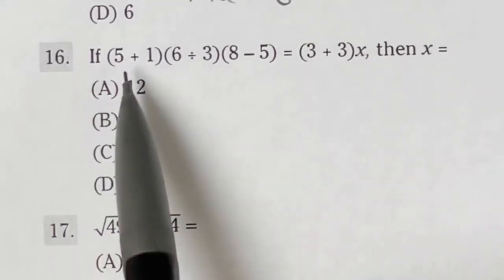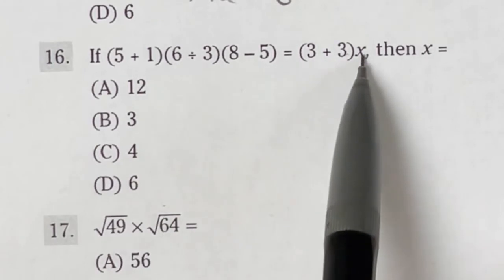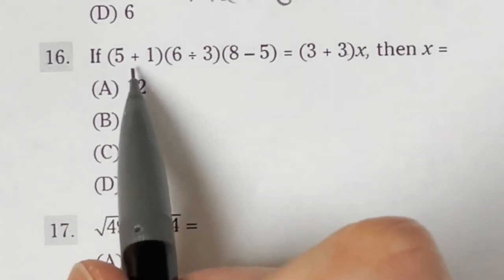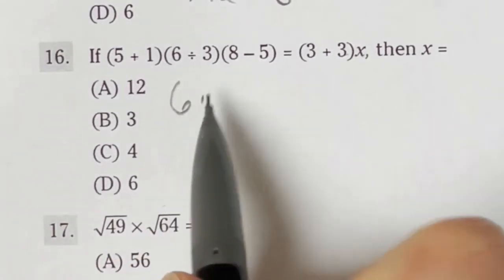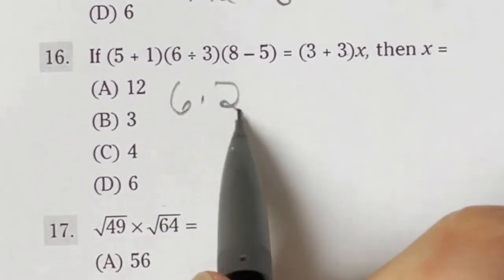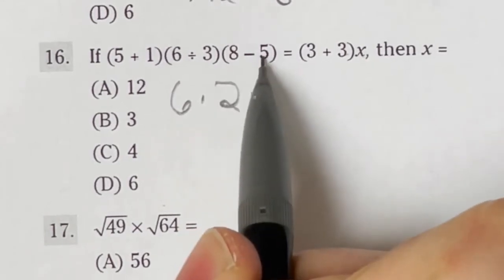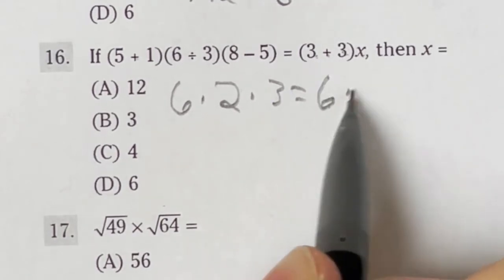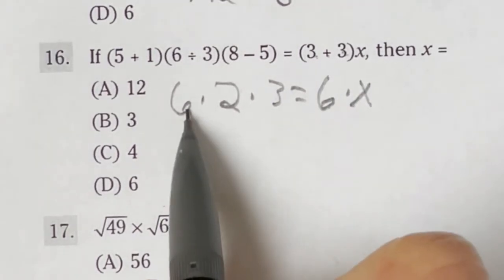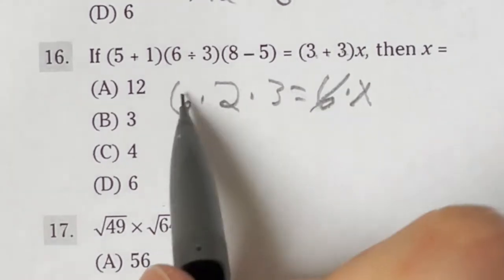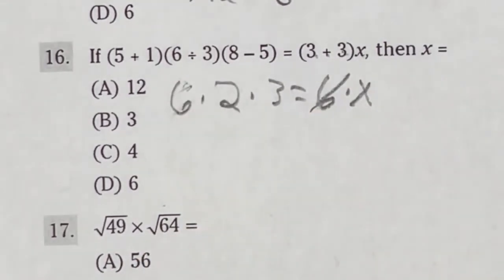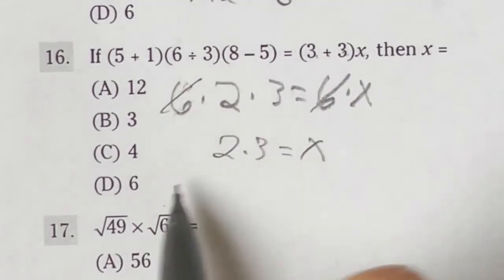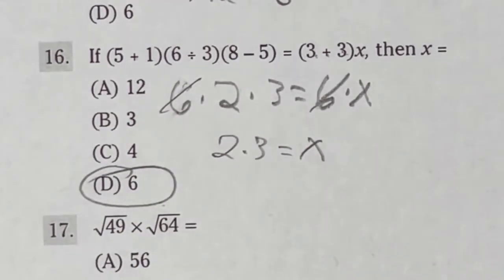Number 16 on the ASVAB says this whole thing is equal to this times x. Then that means x is equal to what? Well, let's go ahead and look closely at this. 5 plus 1 is 6 times 6 divided by 3, which is 2, times 8 minus 5, which is 3, equals 3 plus 3, which is 6, times x. So let's go ahead and do these over here first. Well, right off the bat, I can cancel out these sixes on both sides. Those can go away. And that's going to leave me with 2 times 3 equals x. 2 times 3 is 6. So that's going to give me D as a final answer.